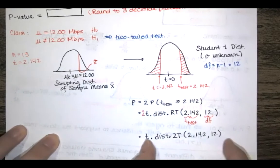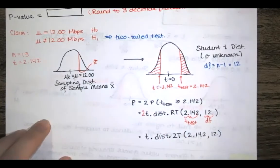So you can either use this two-tailed function or you can use the right tail and then double it and you're going to get the same value either way.